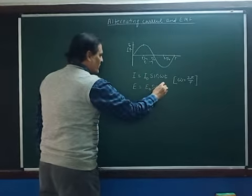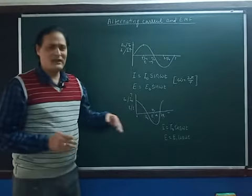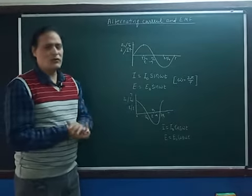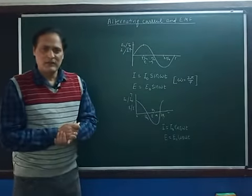Here current and EMF represent the variable terms—instantaneous current or EMF along the y-axis and time along the x-axis. We can follow either sine variation or cosine variation; the only difference is the phase angle or initial approach angle.